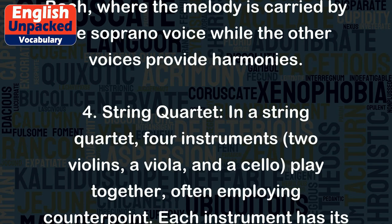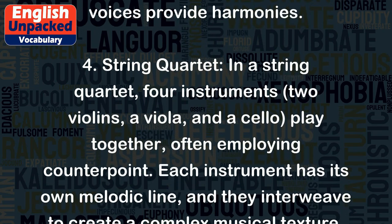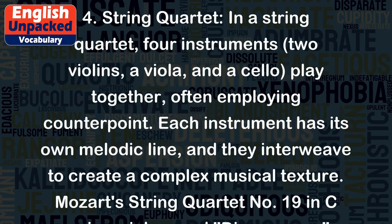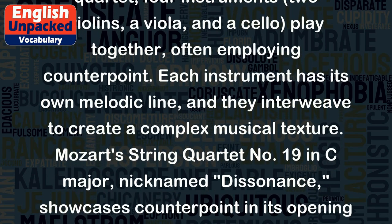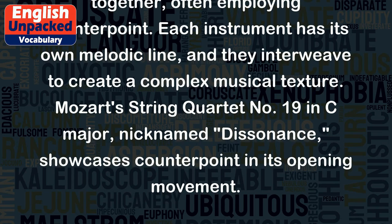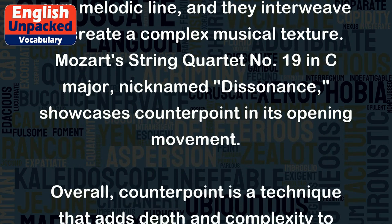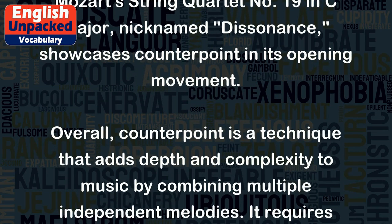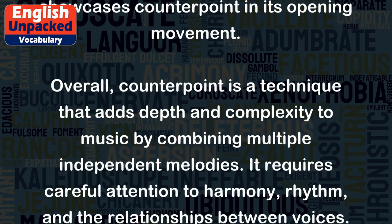Fourth, String Quartet: in a string quartet, four instruments — two violins, a viola, and a cello — play together, often employing counterpoint. Each instrument has its own melodic line, and they interweave to create a complex musical texture. Mozart's String Quartet No. 19 in C major, nicknamed Dissonance, showcases counterpoint in its opening movement.